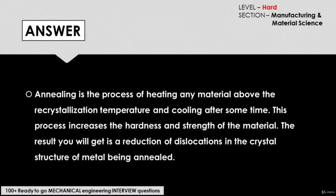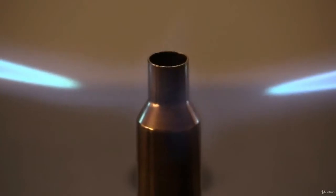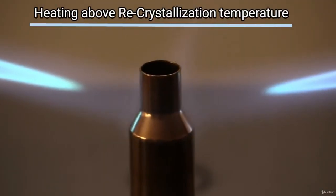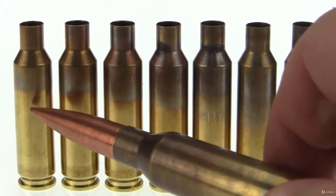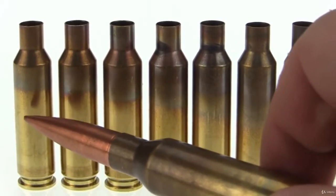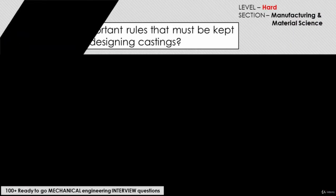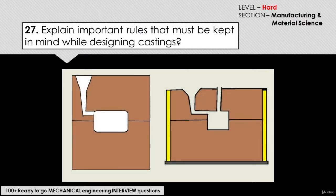Annealing is the process of heating any material above the recrystallization temperature and cooling after some time. This process increases the ductility and strength of the material. The result is a reduction of dislocations in the crystal structure of the metal or material being annealed.